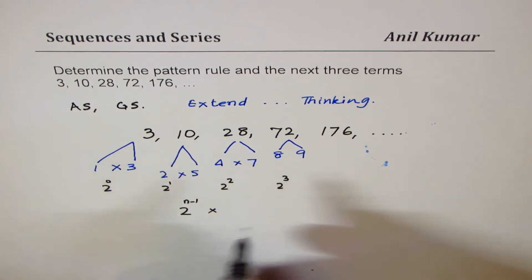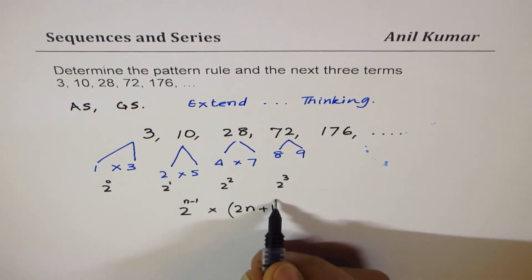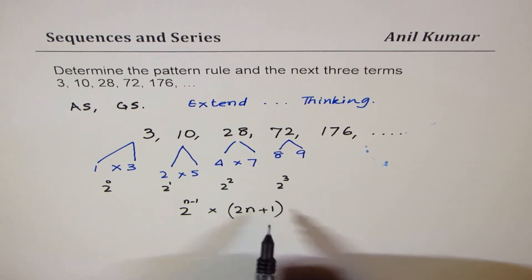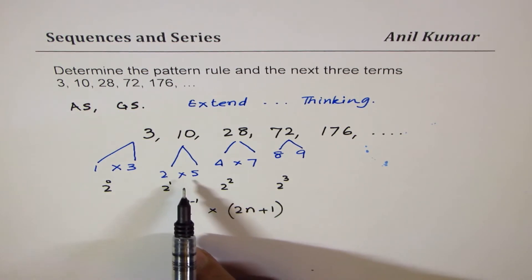Now, how do you get 3 as the first term? It is 2 times n, which is, if n is 1, we get 2 plus 1, we'll give you 3. 5. Second term, if I write n as 2, 2 times 2 is 4, 4 plus 1 is 5. We do get it.